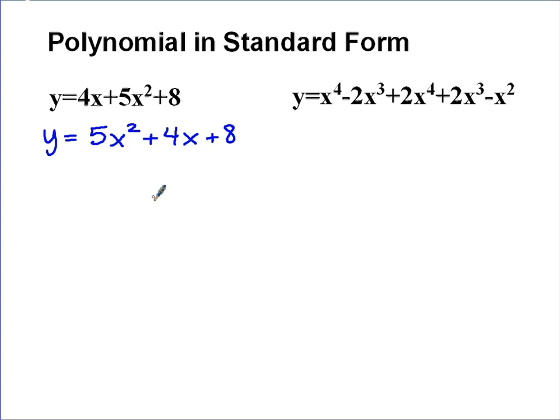On the right, you can see they're kind of out of order, but also we have numerous ones with the same power. So this x to the fourth and this plus 2x to the fourth are like terms. I'm going to add those together. 1x to the fourth plus 2x to the fourth is 3x to the fourth.